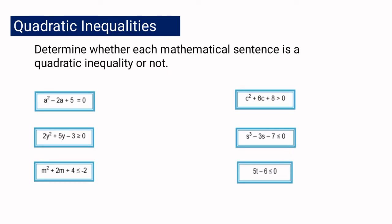I have here six mathematical sentences. We are going to identify whether each sentence is a quadratic inequality or not. The first one: ax squared minus 2a plus 5 equals 0. It is not a quadratic inequality. Even though it is in the second degree, the symbol here is equal, which makes it a quadratic equation and not a quadratic inequality.